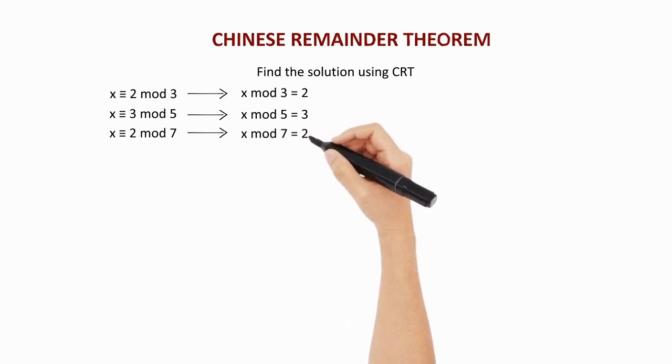So, what are we supposed to find out? We have to find that value of x which when divided by 3 gives remainder 2, on being divided by 5 gives remainder 3, and on being divided by 7 gives remainder 2.